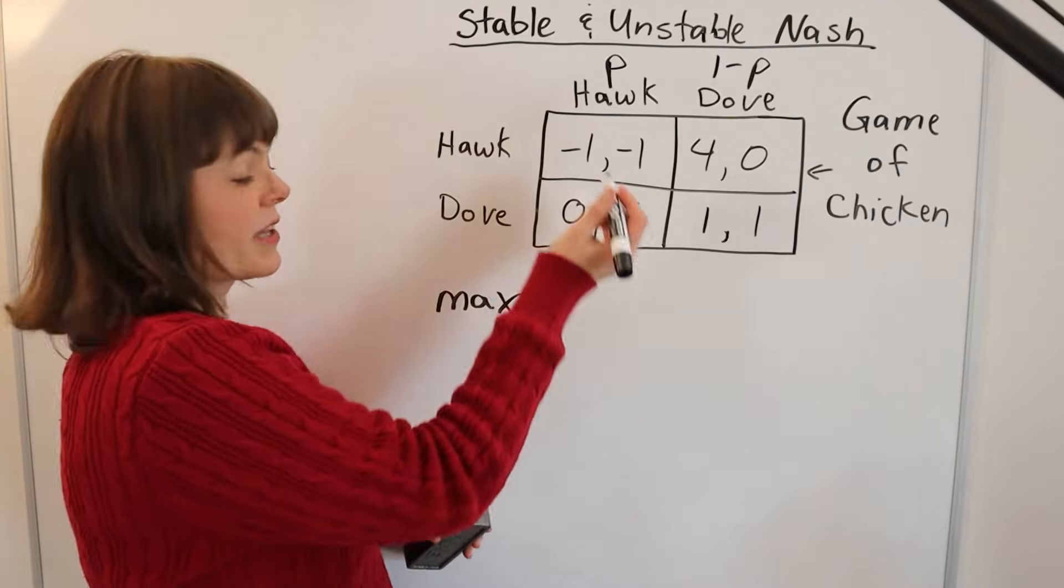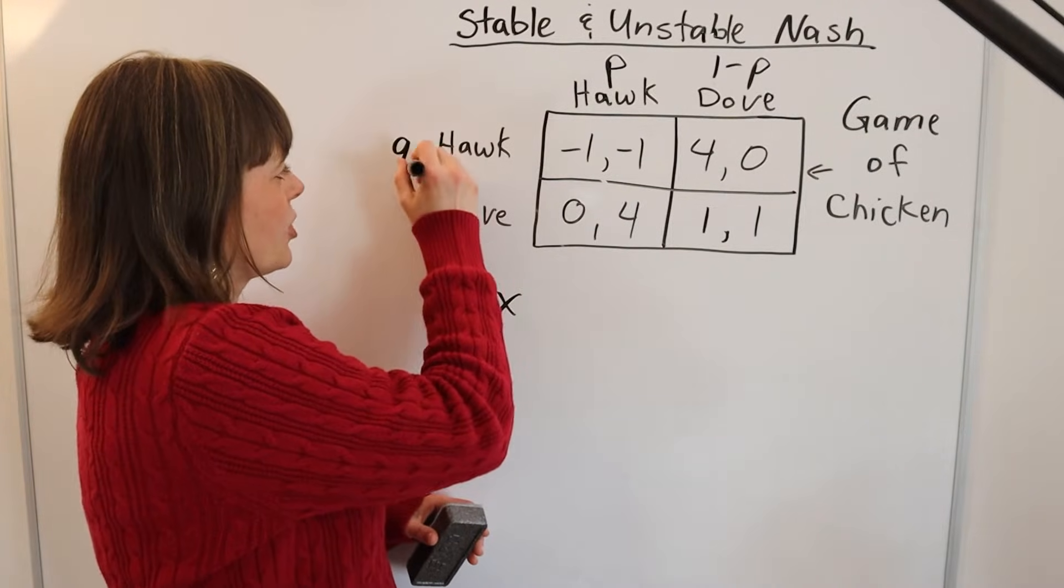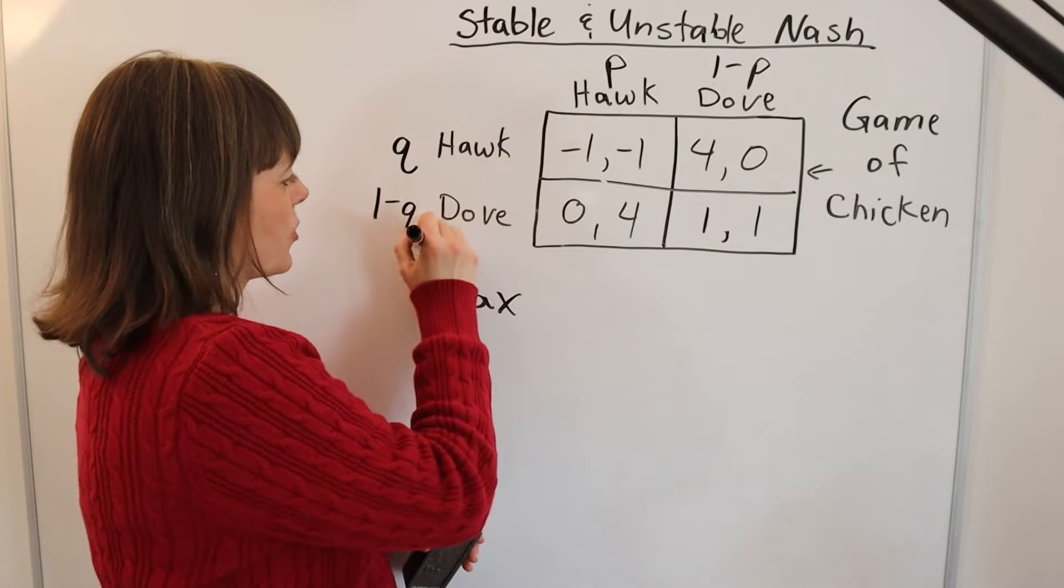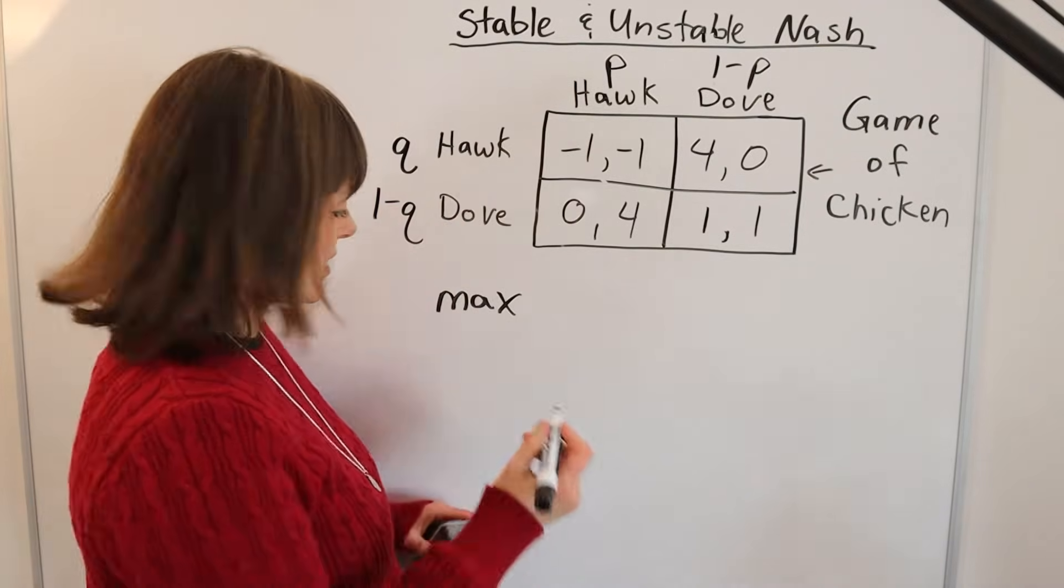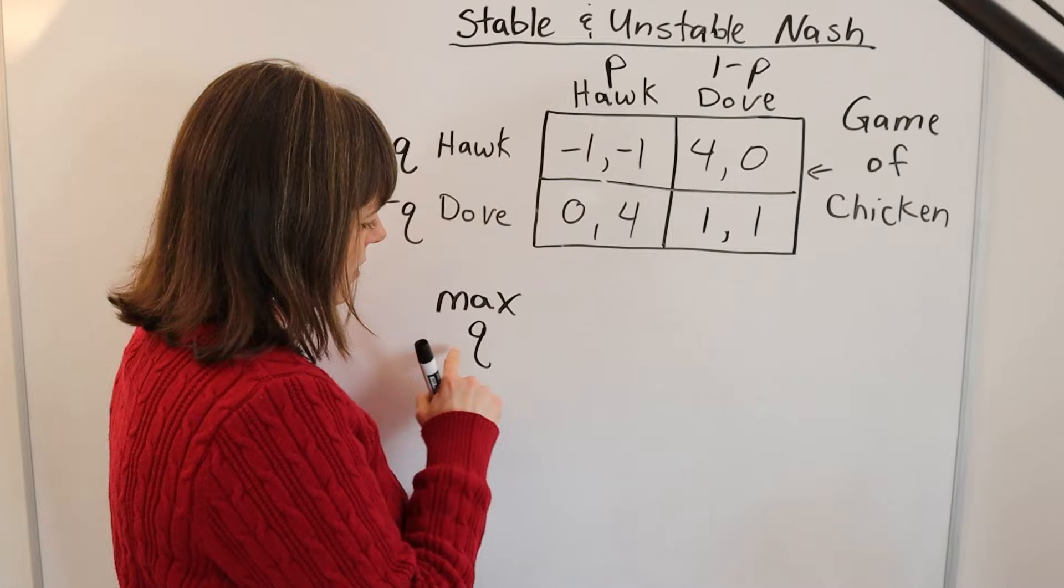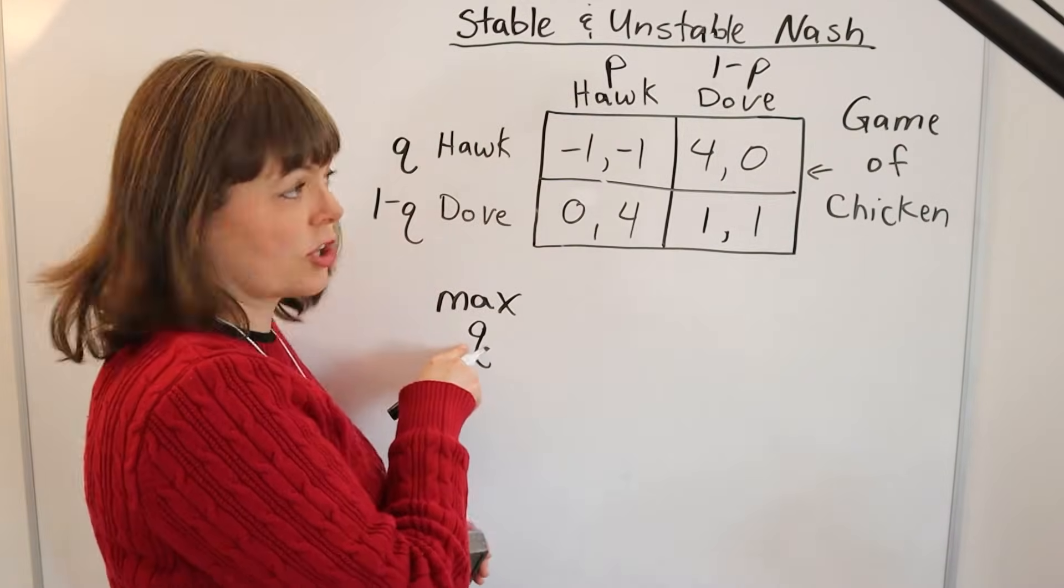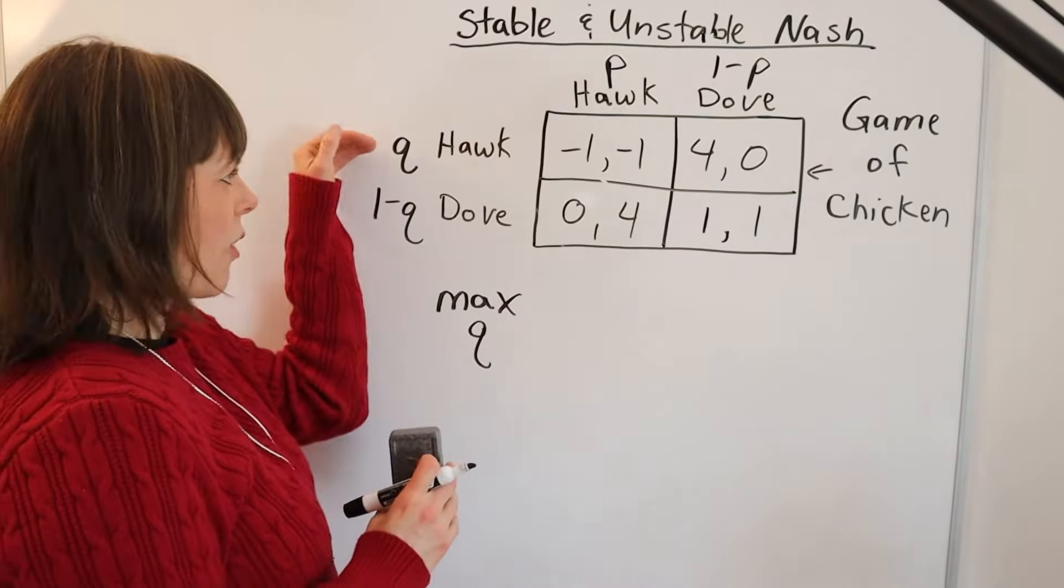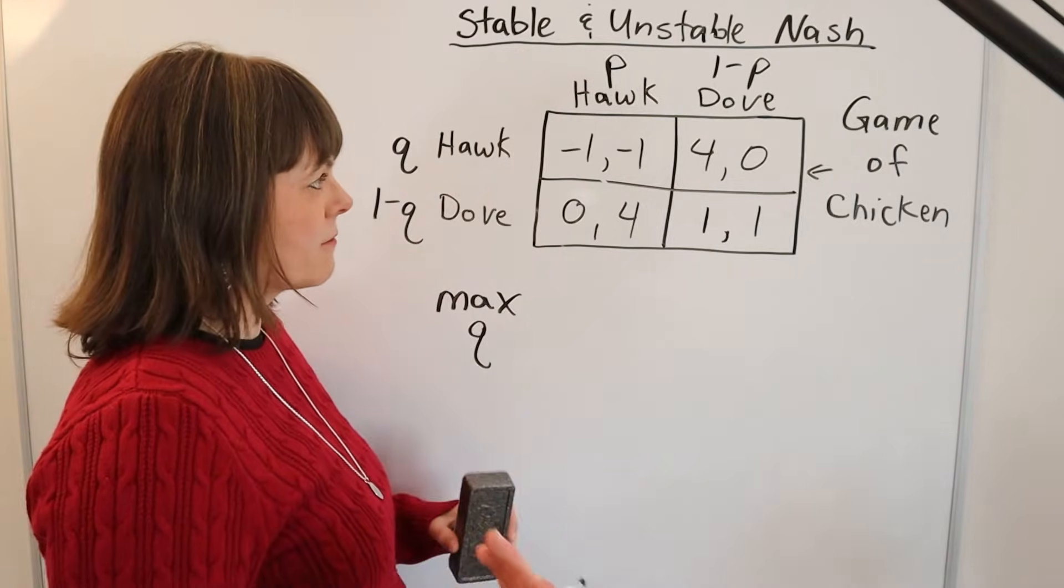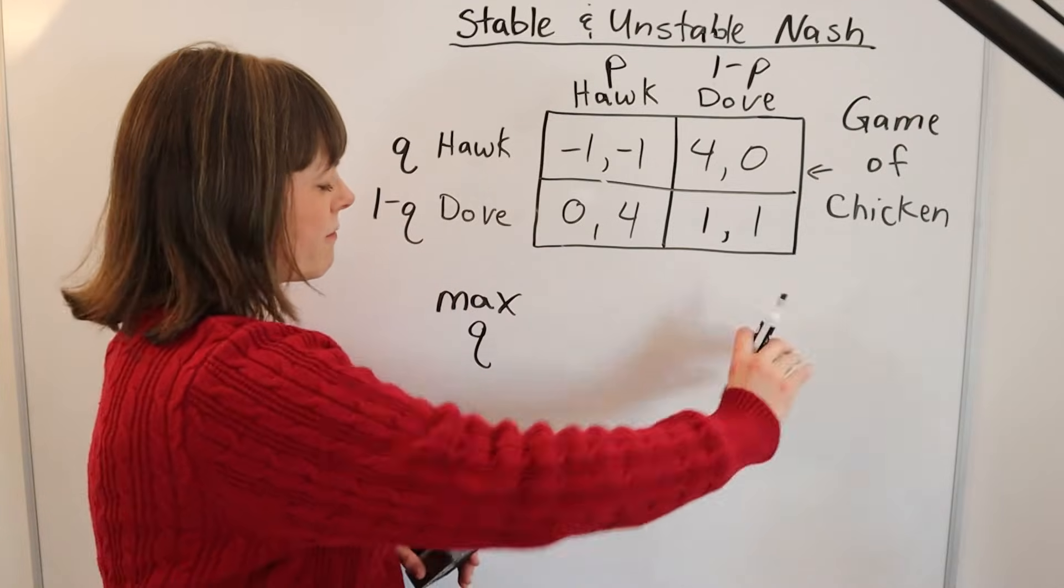In this case, I'm going to let player one mix with probability Q and 1-Q. Player one is going to control Q. So we maximize player one's objective function by choosing Q—choosing the probability you go Hawk versus Dove. What is the total payoff function here?